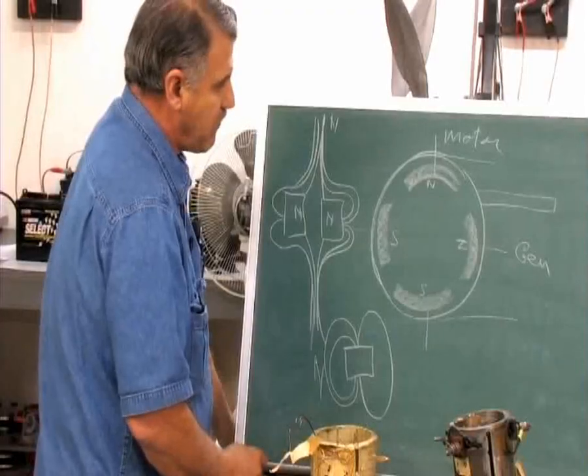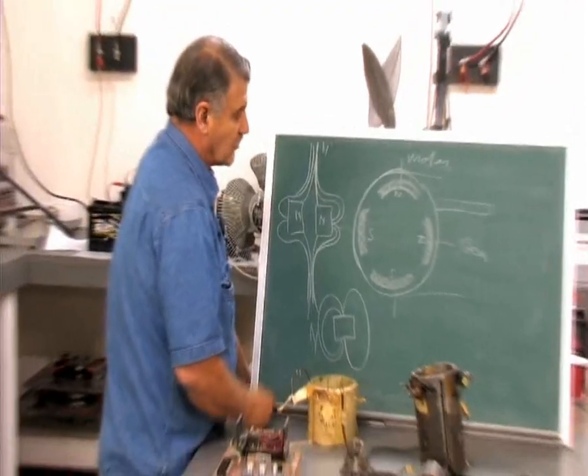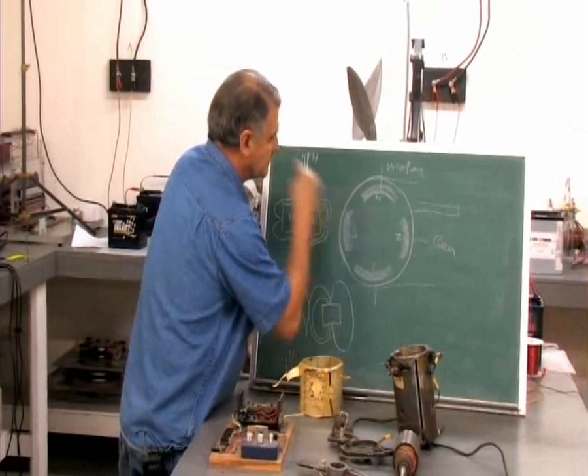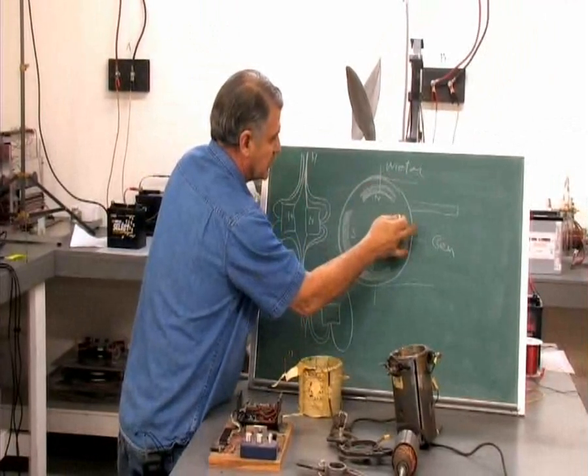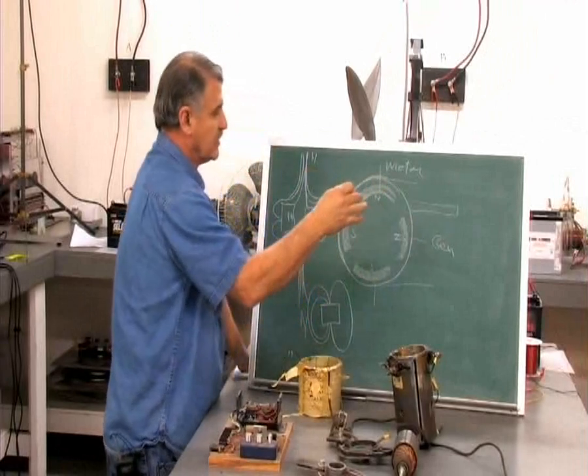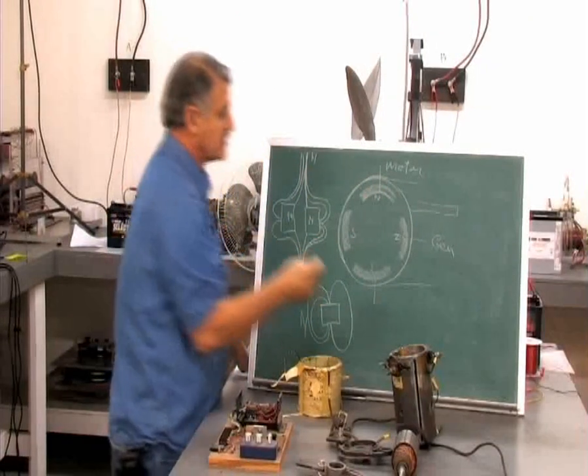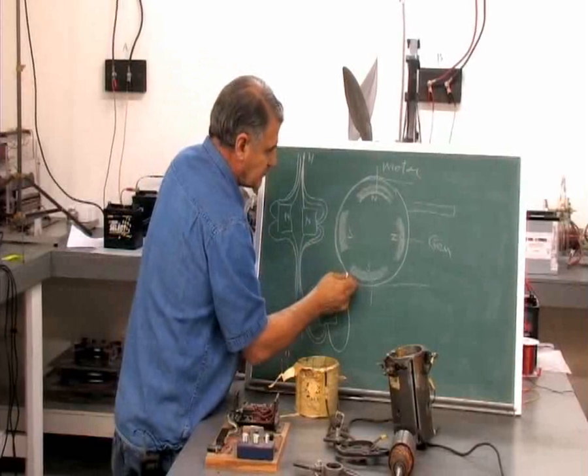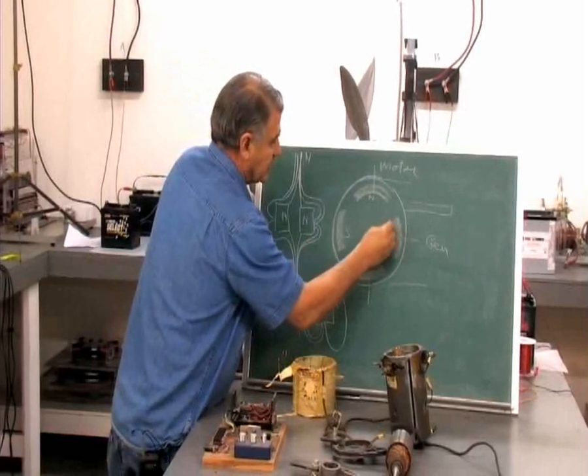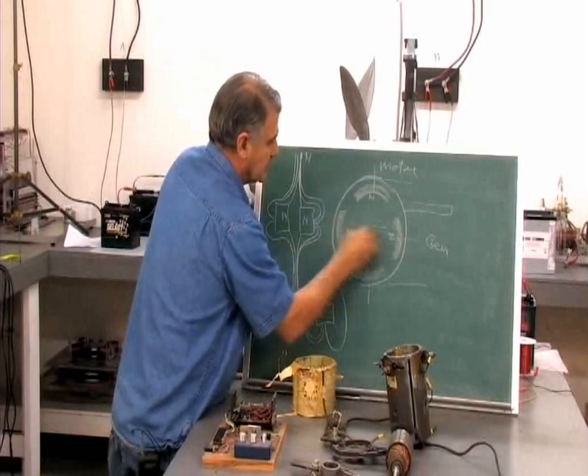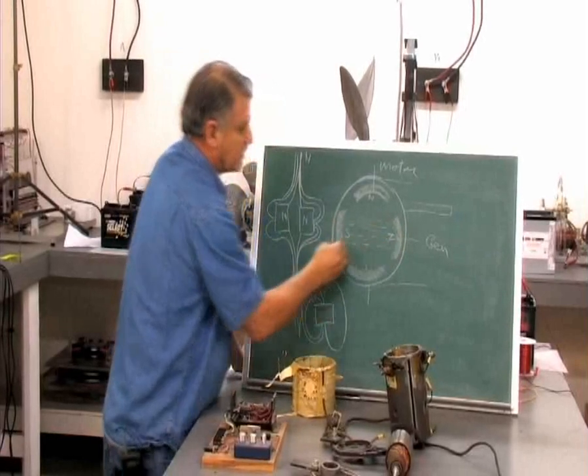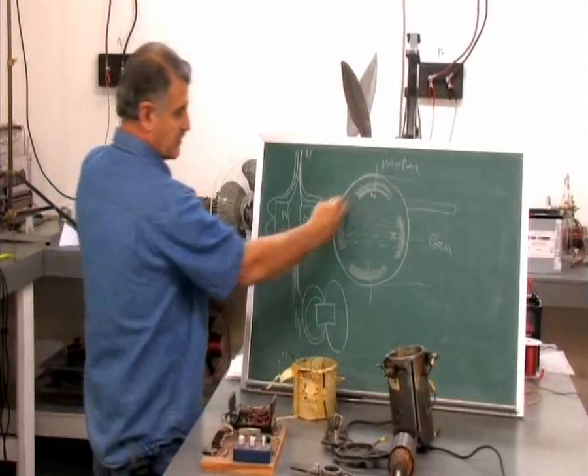So what was really going on in this thing was, the generator and the motor, the generator is a constant thing, and the motor is a switch thing. So between these two, you have an attraction field when it's generating, because these are energized.